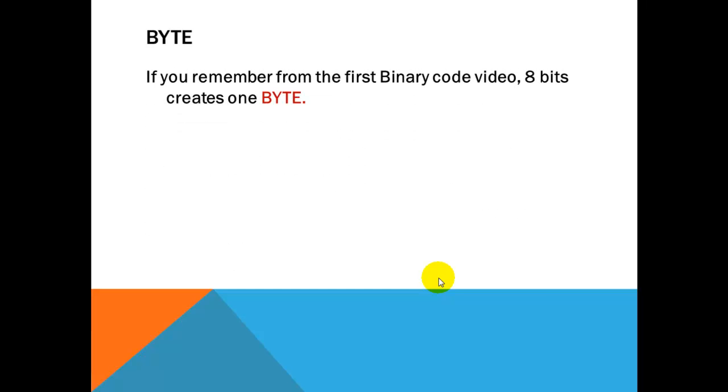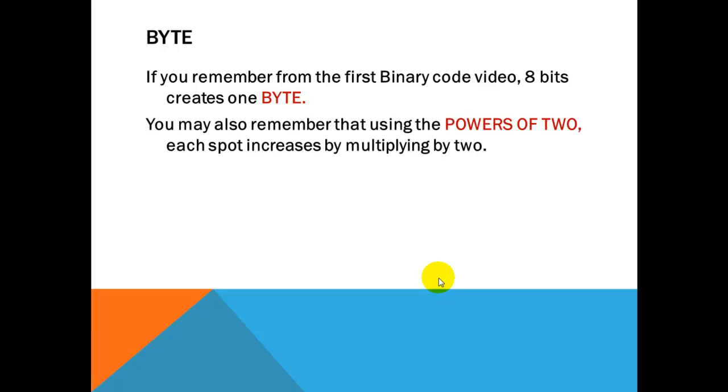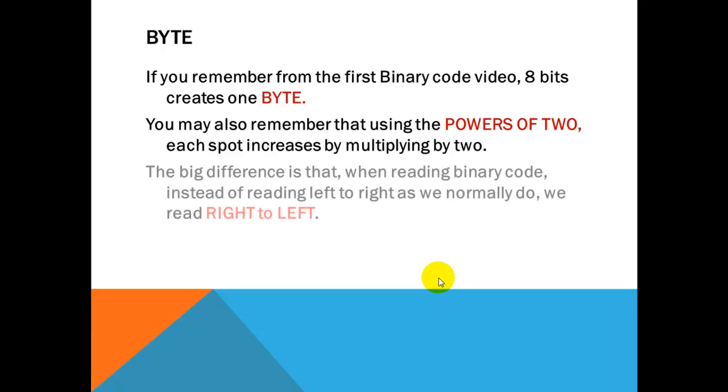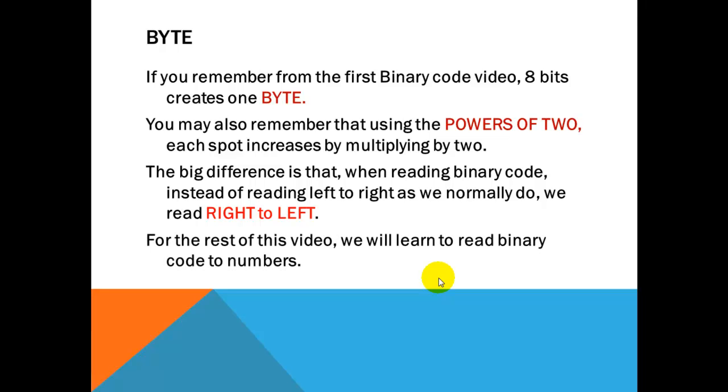Now, if you remember from the first binary code video, 8 bits creates 1 byte. And if you also remember the powers of 2, each spot increases the number of combinations by multiplying it by 2. The big difference in reading binary code is that instead of reading from left to right as we normally do, binary code reads from right to left. And that's probably one of the biggest things that you have to work on. So, for the rest of this video, we're going to have to learn to read binary code and convert it to numbers.